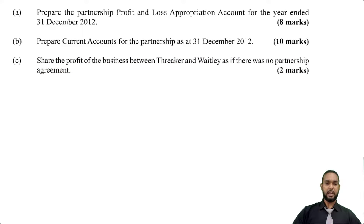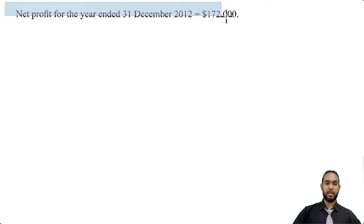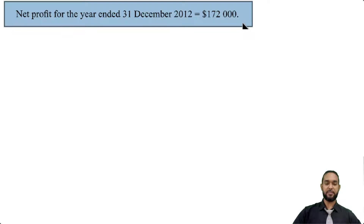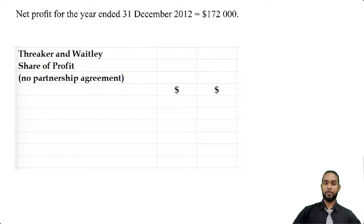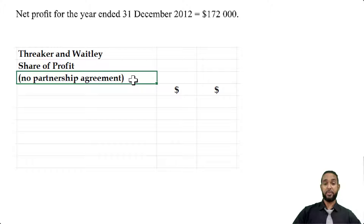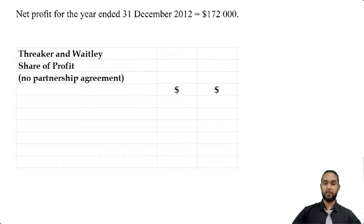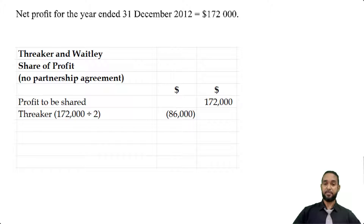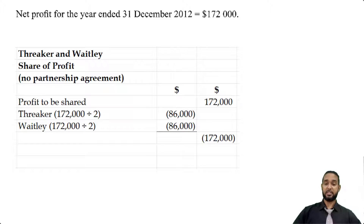So let's pull up the net profit of the partnership, which is $172,000. Threka and Waitly's share of profit where there's no partnership agreement for the year ended 31st December 2012: the profit to be shared is $172,000, Threka gets half — $172,000 divided by 2 — and the same for Waitly, they share it equally. It ties back to $172,000 and there's nothing left to appropriate; it's all been shared between the partners.